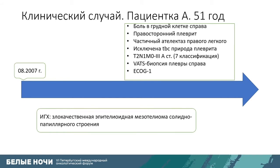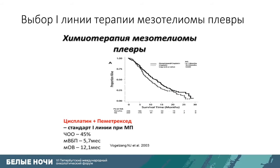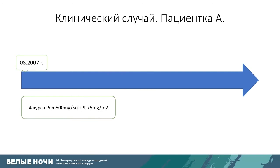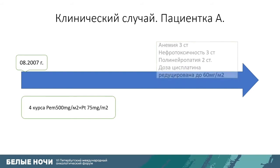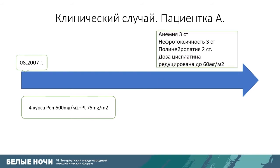According to local practice, patients with stage 3 and 4 disease are offered drug treatment — chemotherapy. Since 2003, the classical first-line treatment was the combination of pemetrexed and cisplatin. The patient had six courses planned, but complications including hematologic toxicity of grade three, nephrotoxicity, and polyneuropathy of grade two led us to first reduce the dose of cisplatin to 60 mg/m², and later to stop the treatment.